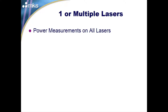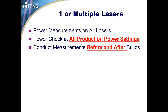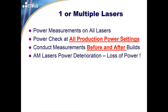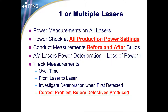With one or more lasers, conduct power measurements on all lasers at all production settings, before and after builds. AM lasers — all lasers — will experience power deterioration. It's absolute. It's going to happen for reasons including power supply, optics, or cover glass. When lasers fail, they lose power. We need to track measurements over time, from laser to laser, and understand what within that laser is causing the deterioration. The closer we get to understanding the personality of that laser, the more we can maintain it within tolerance and correct it before we make defects.